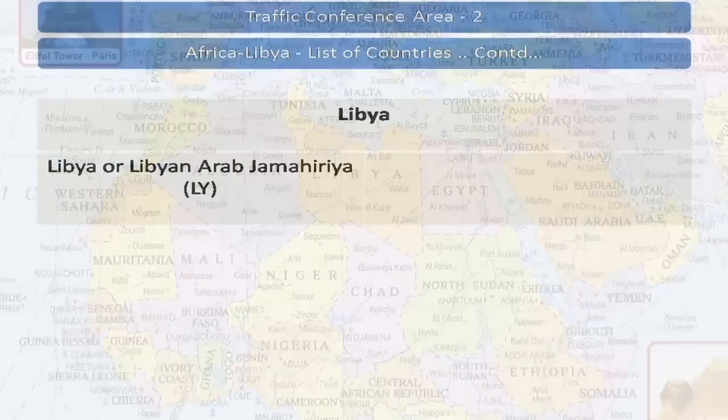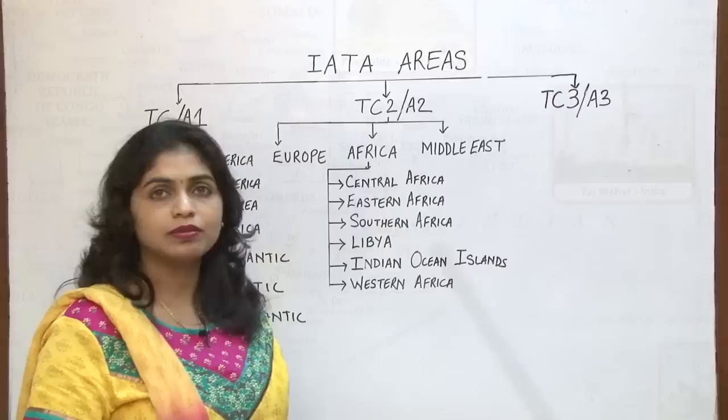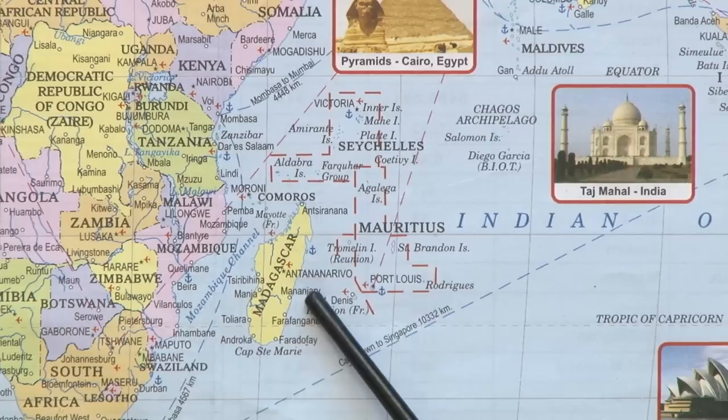Let us now check the list of countries in Indian Ocean Islands. These are the island nations or major islands which fall under Indian Ocean Islands. You can see Madagascar, the bigger one, and Mauritius which fall under here.